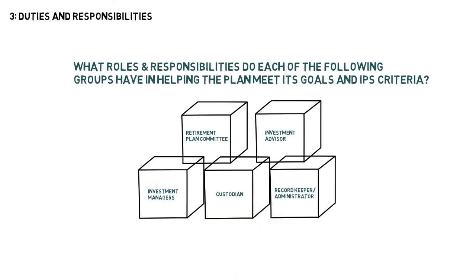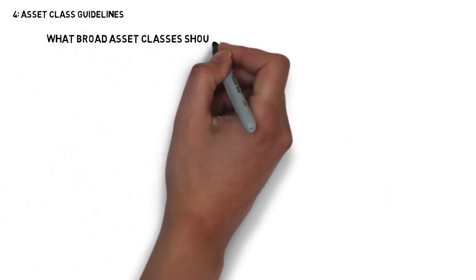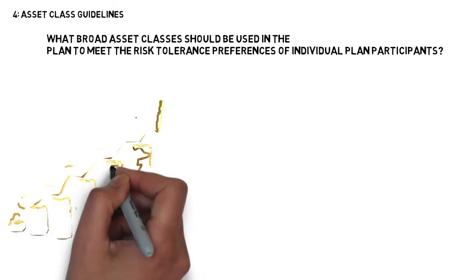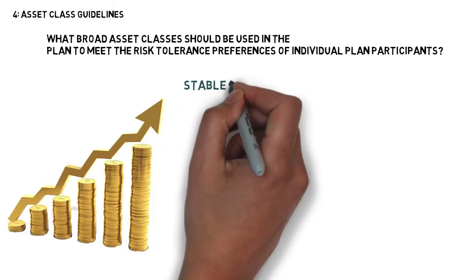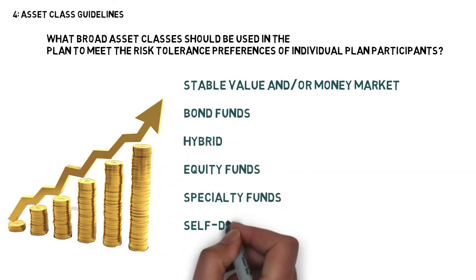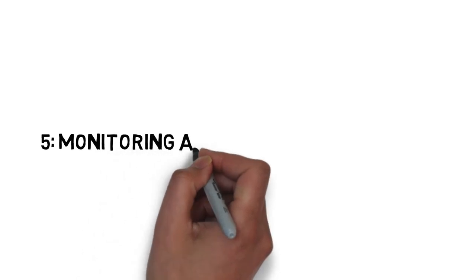Another important question concerns asset class guidelines — what broad asset classes should be used in the plan to meet the risk tolerance preferences of individual plan participants? These include stable value and/or money market funds, bond funds, hybrid equity funds, specialty funds, self-directed brokerage accounts, company stock, or other individual securities.